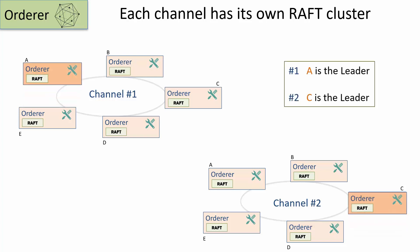What that means is that for the two channels, there will be different leaders. For example, for channel one, A may be the leader and for channel two, orderer C may be the leader. These raft clusters will continue to operate independent of each other.